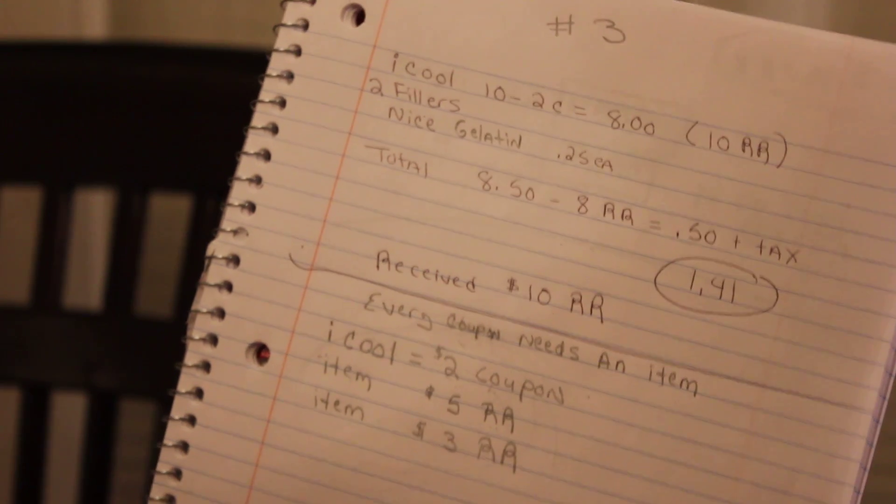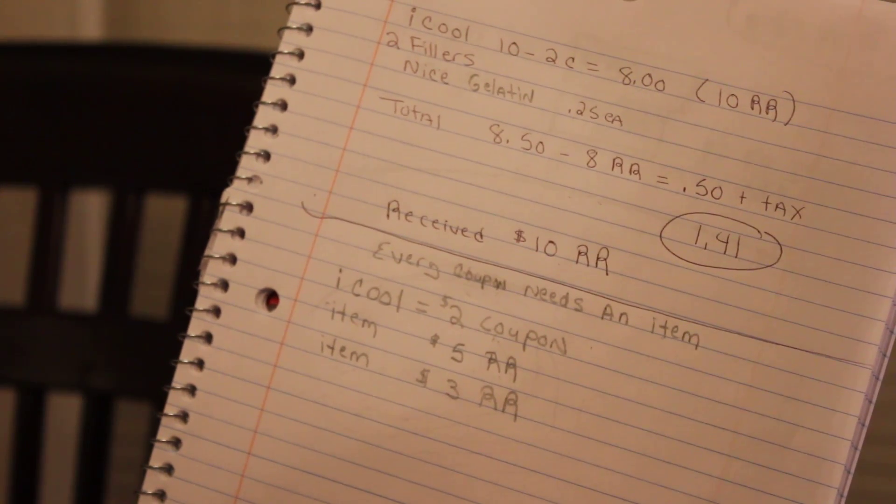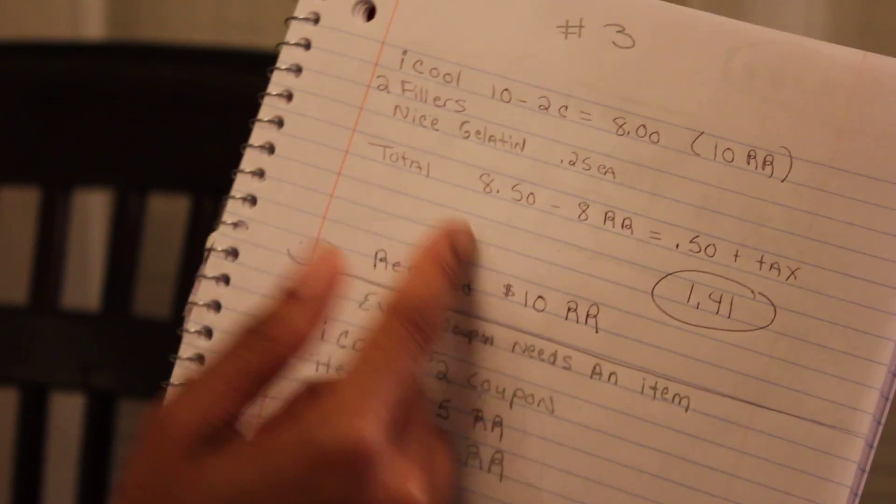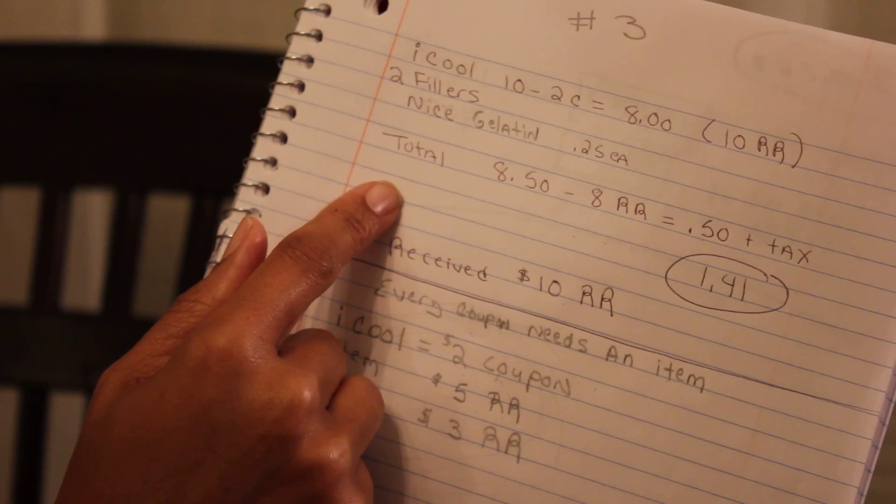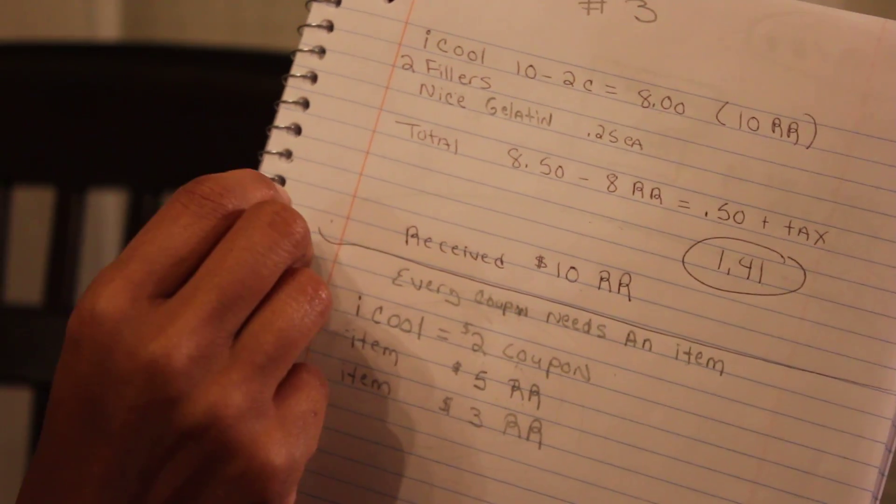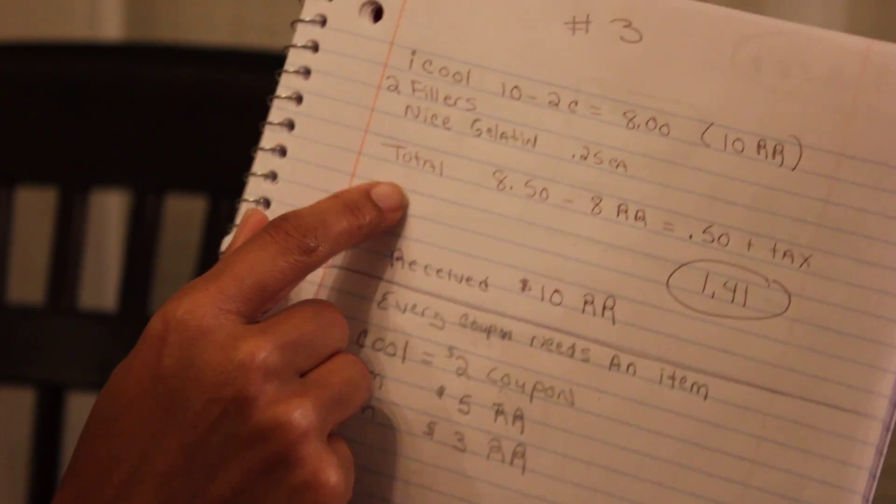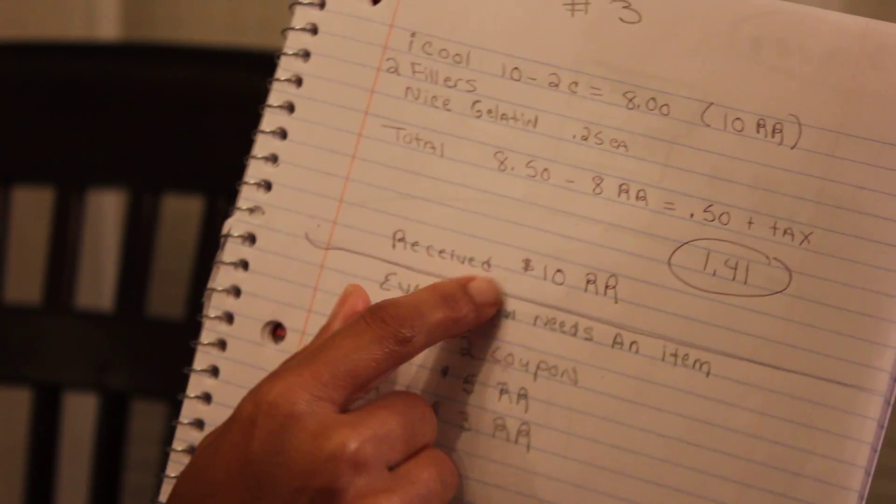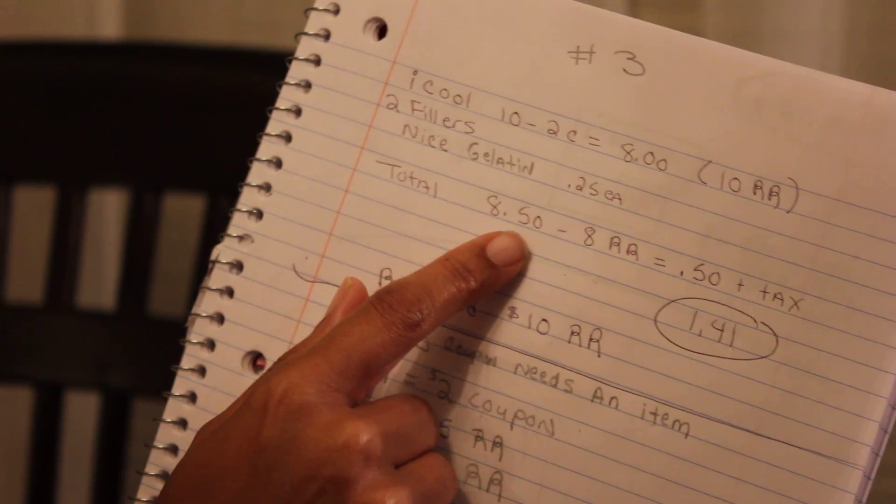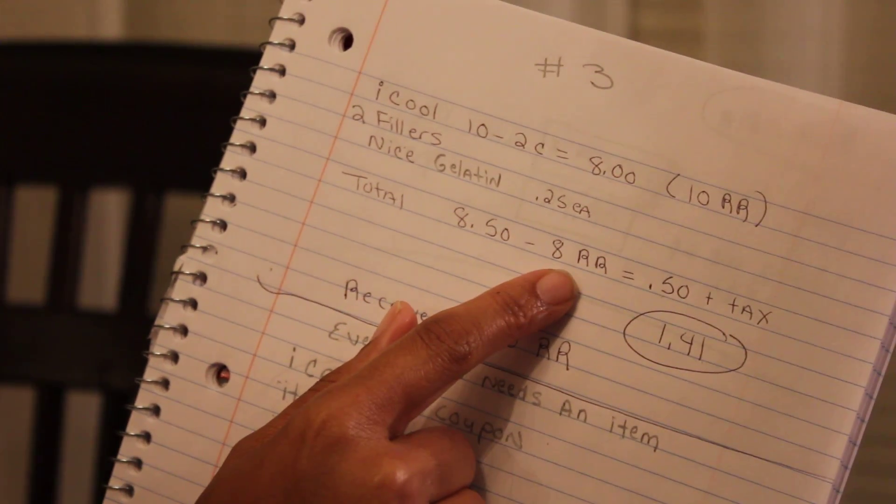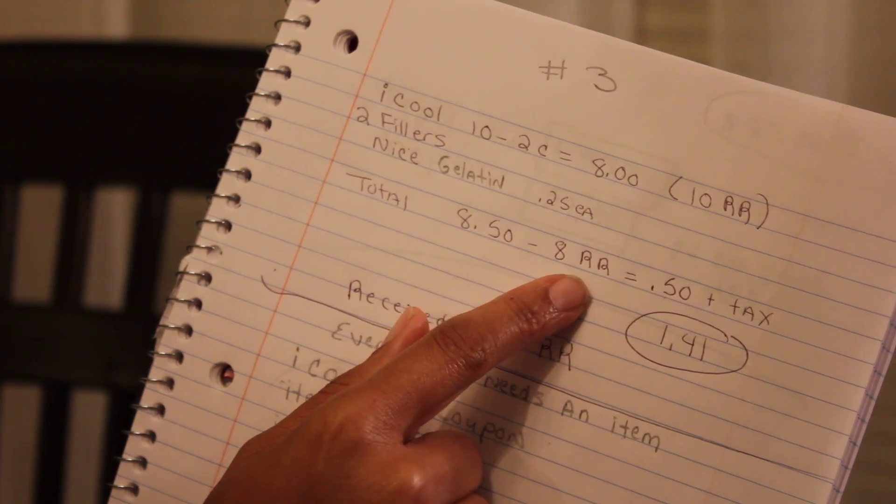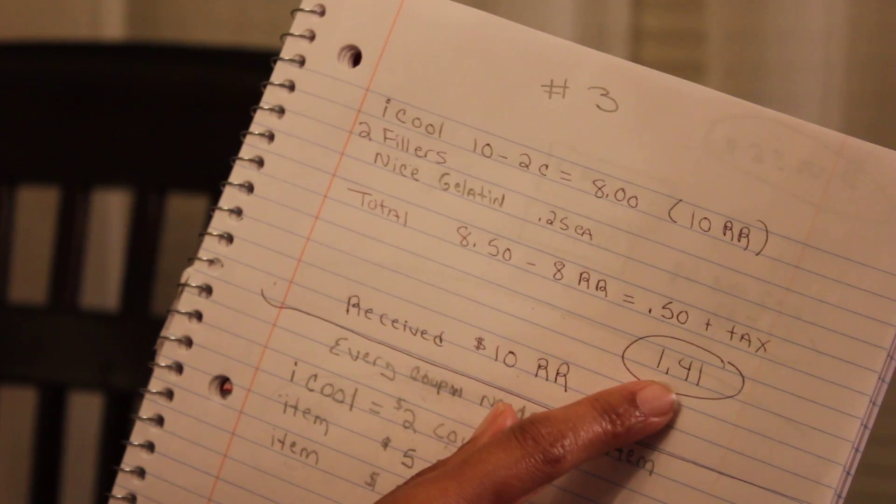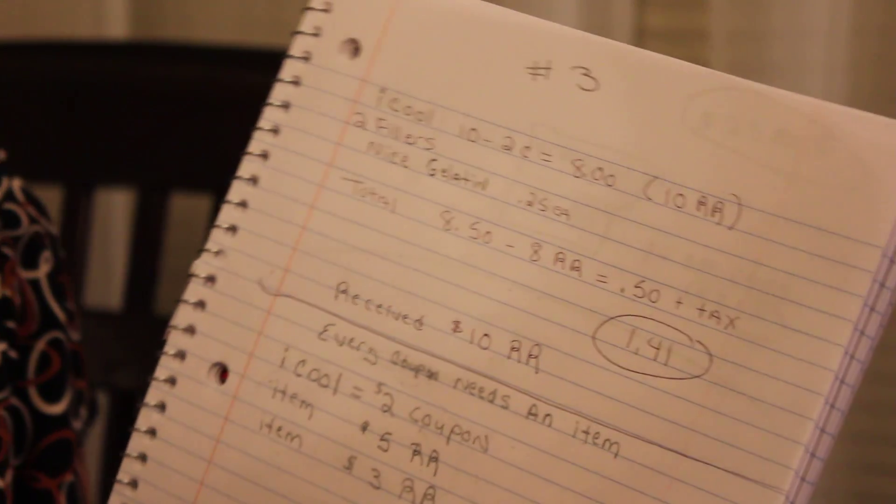Just kind of remember that. Think about a wedding, you need to be coupled off. Same thing when you do these transactions at Walgreens, you gotta have a coupon per item. So this took care of one, then two gelatins, that took care of two and three. My total was $8.50 and I gave her my $8 in register rewards, the $5 and the $3. So it was 50 cents plus tax. My total was $1.41. That's how I ended up paying just $3.76 for all these items.